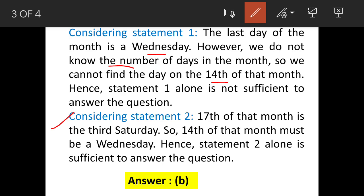But now consider statement two. Now 17th of the month is Saturday, third Saturday. Now 14th of the month, if you work out backwards, is going to be Wednesday. So statement two alone is sufficient to answer the question.